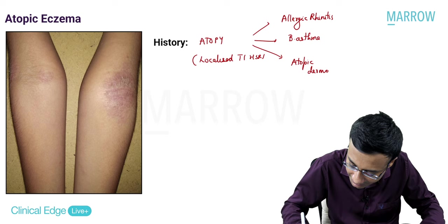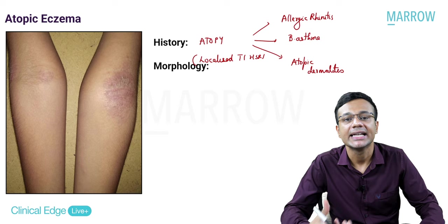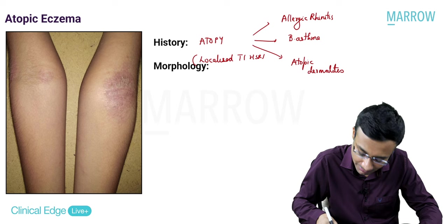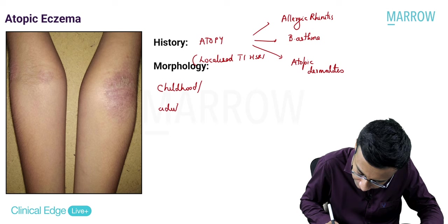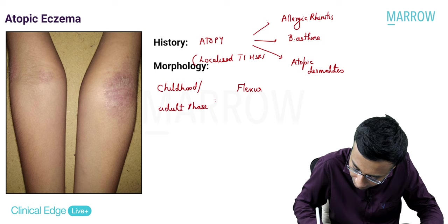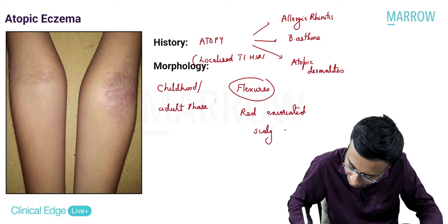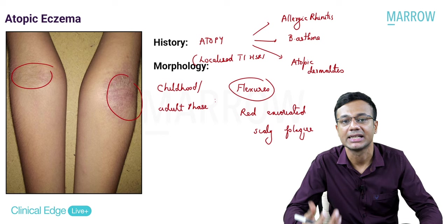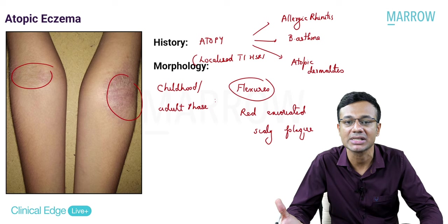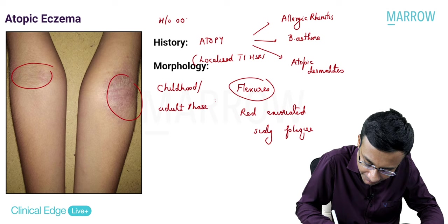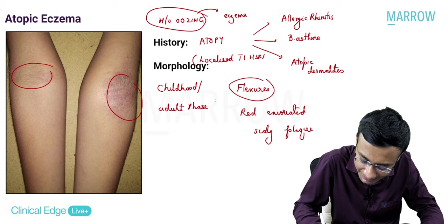To distinguish psoriasis from eczema at MBBS level, ask history of oozing - oozing means it is probably referring to an eczematous process. It is very important to ask history of oozing for the diagnosis of atopic eczema.